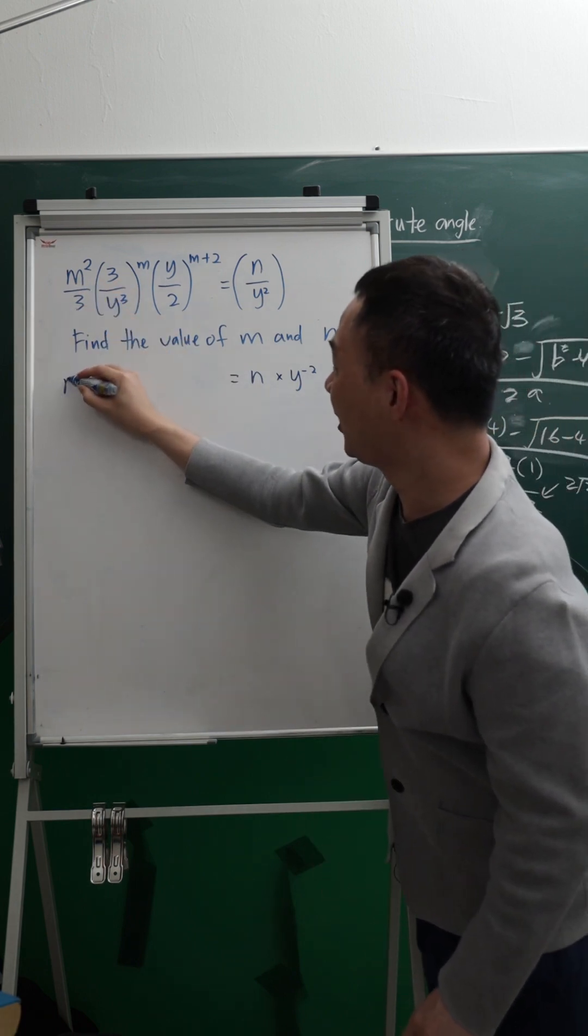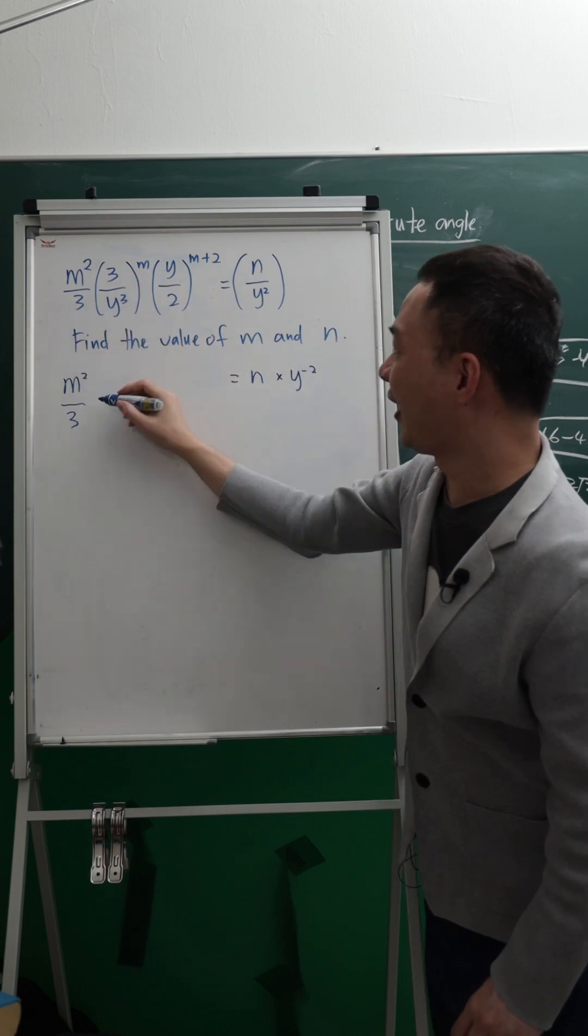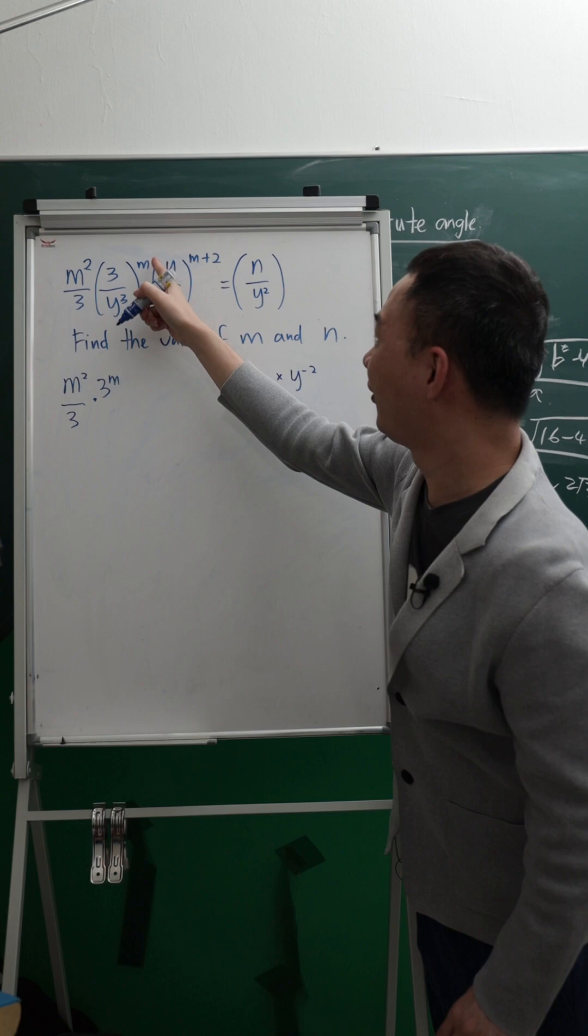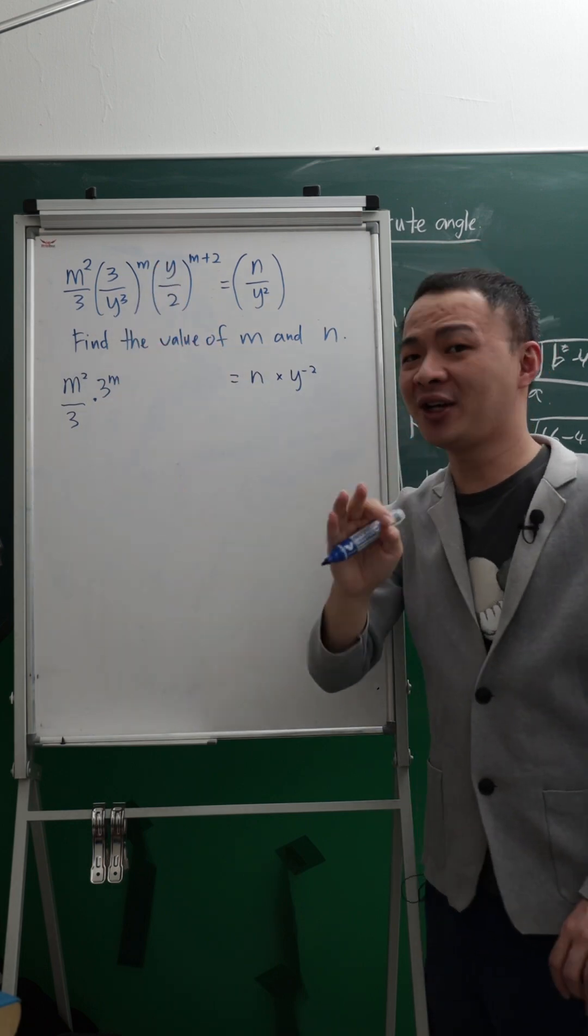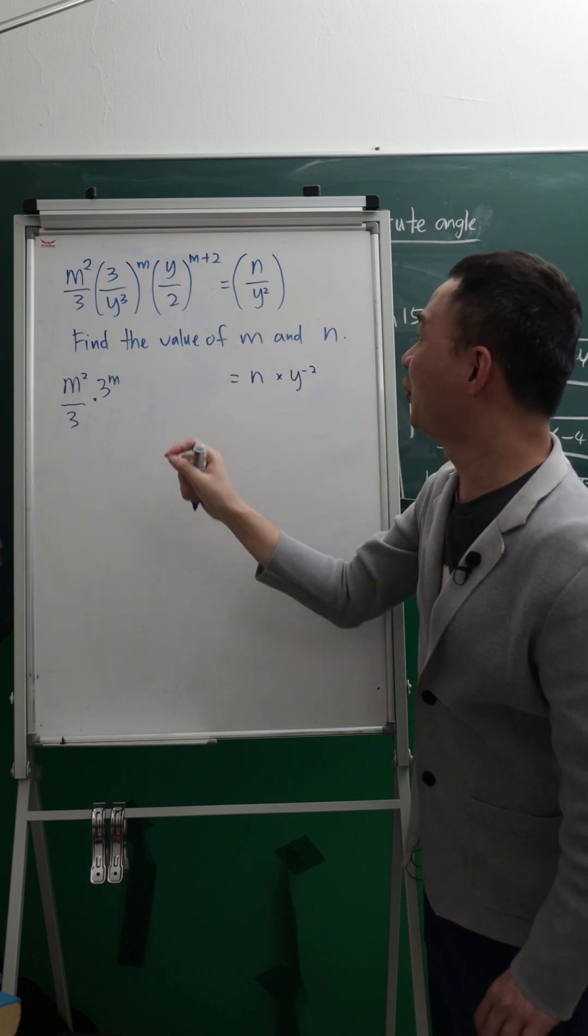This is M square, I will copy M square over 3. This is 3 power of M, so I will multiply 3 power of M, Y cube power of M. Then Y power of 3M, I will take it out later. Then over here, I have Y, I will do it later.